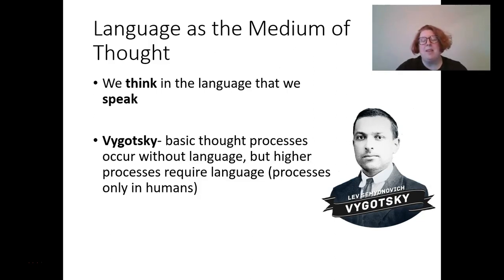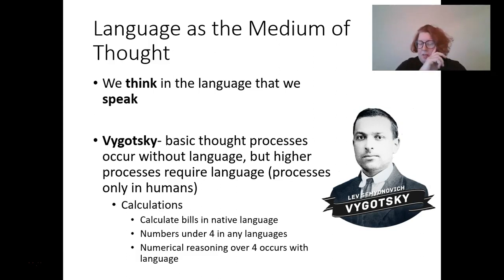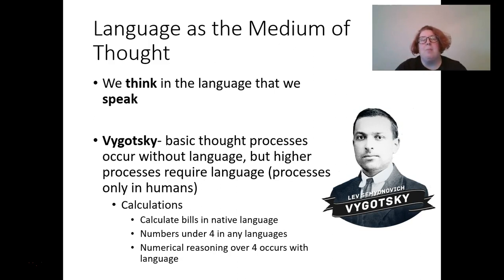Vygotsky thought that basic cognitive processes occur without language, but higher processes — the ones that only happen in humans, like reasoning, analysis, and complex emotions — require language. An example of this is calculations: we calculate bills in our native language. Research suggests that numerical reasoning for numbers under four can occur in any language, but numerical reasoning over four happens in our native language — the language we're most familiar with.